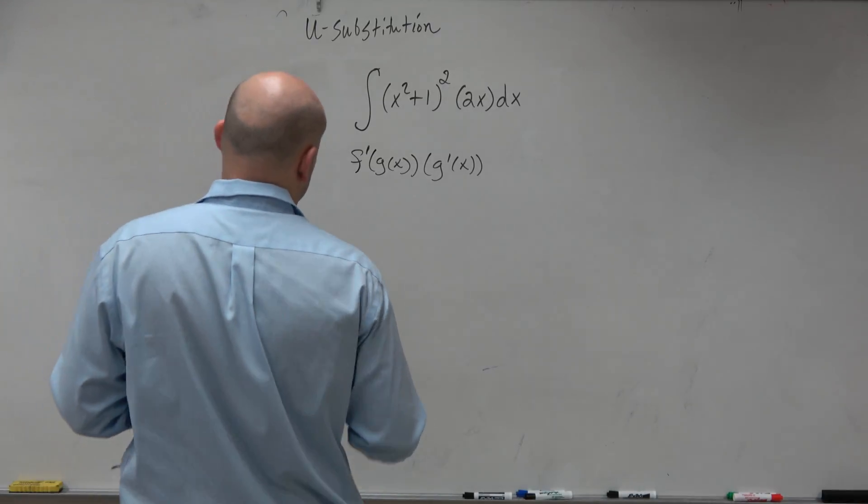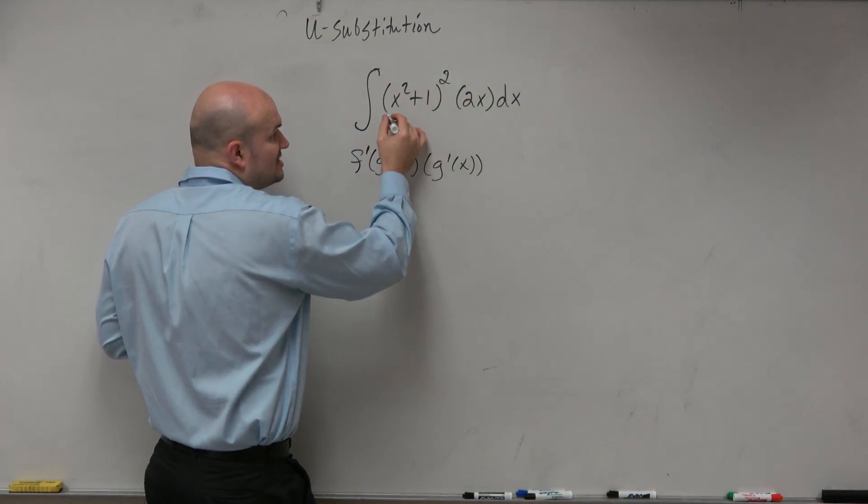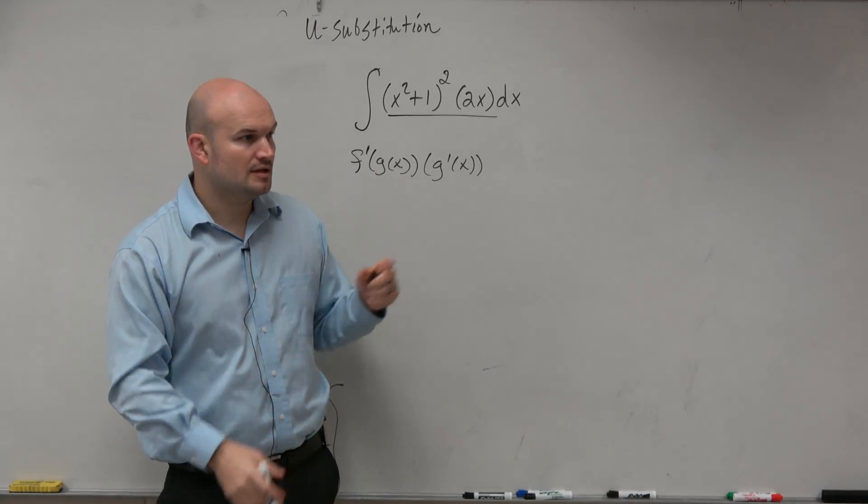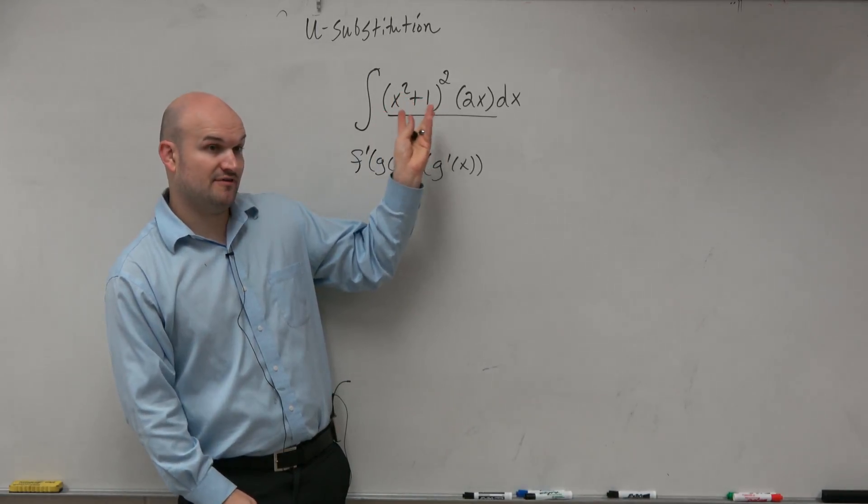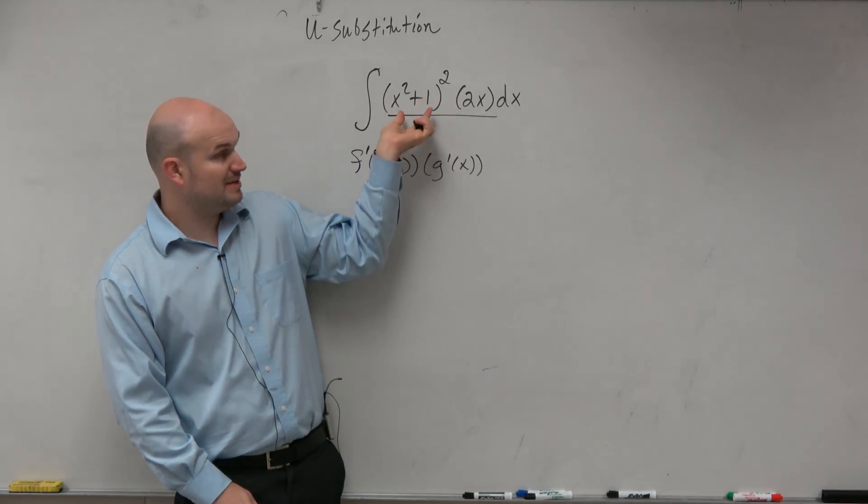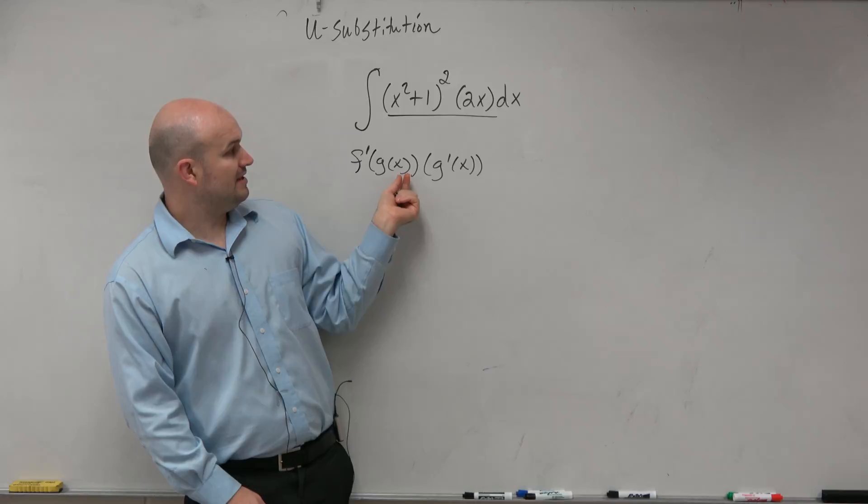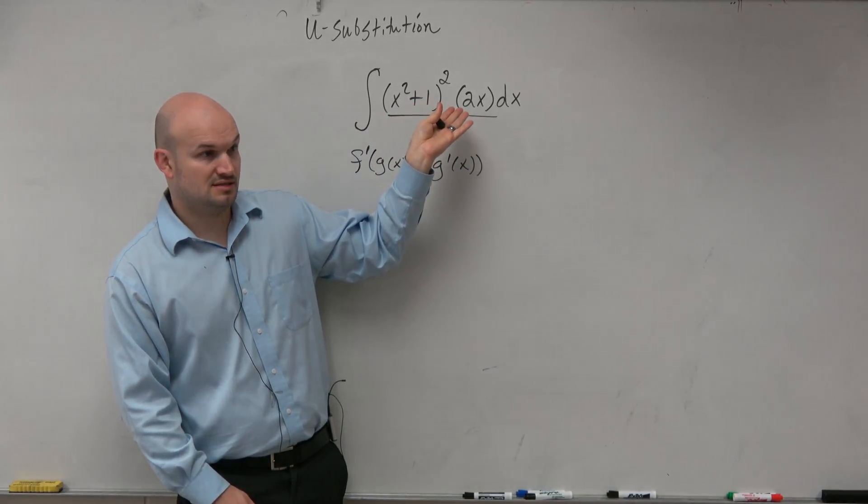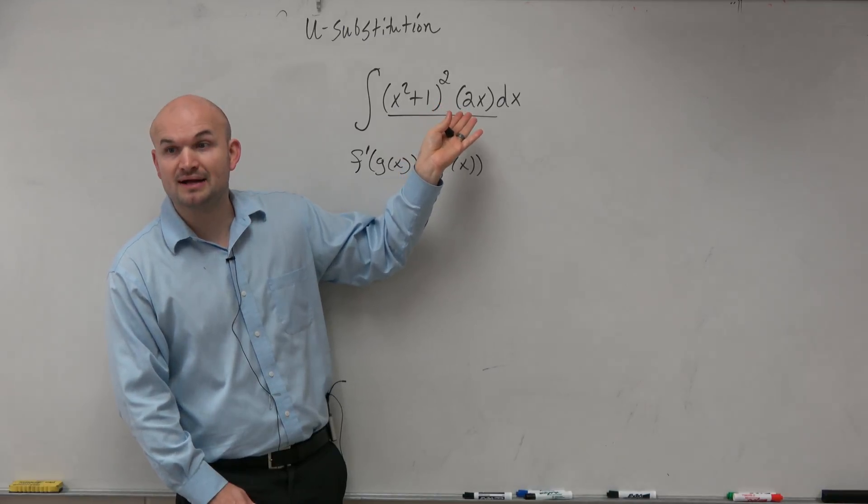So when we're doing this, we're looking at the chain rule. And basically what we want to see is, does this integrand fall along like this pattern? Could we say the outside function could be like x squared? The inside function would be x squared plus 1, and then the derivative of x squared plus 1 is 2x. Does that seem properly unpacked?